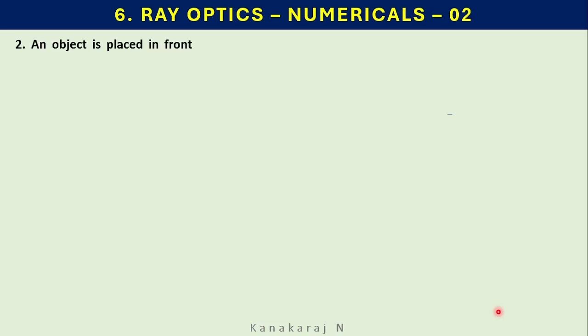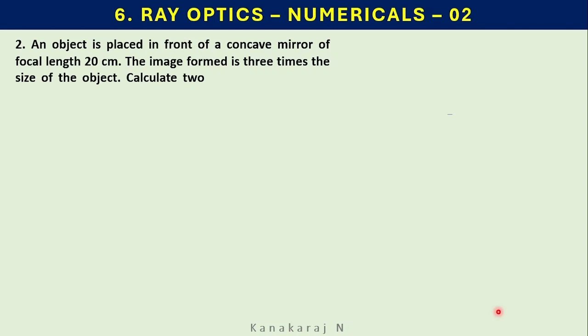An object is placed in front of a concave mirror of focal length 20 centimeter. The image formed is three times the size of the object. Calculate two possible distances of the object from the mirror.